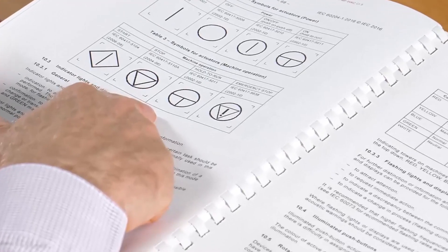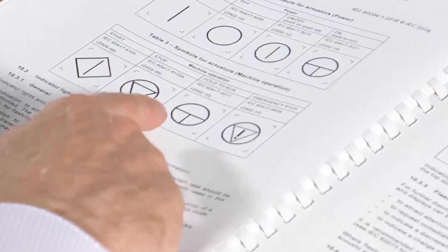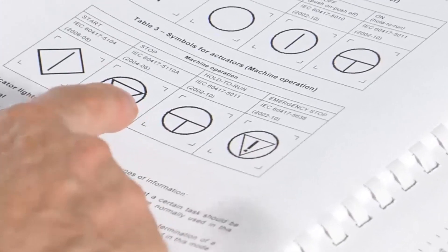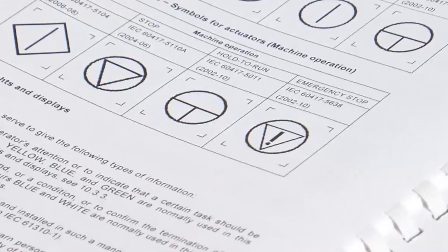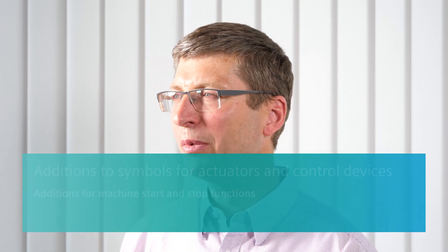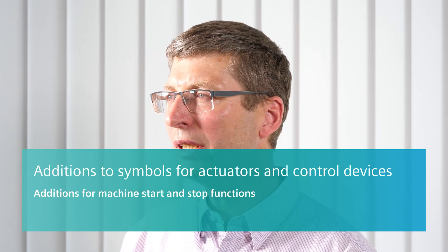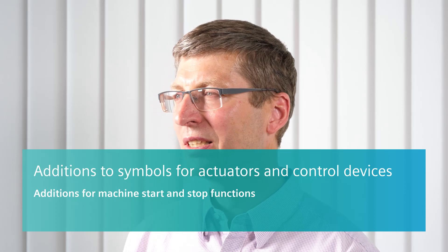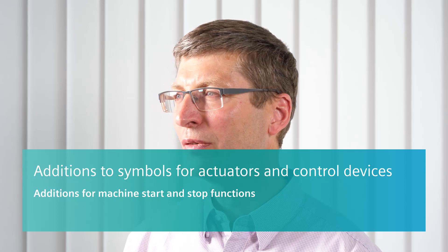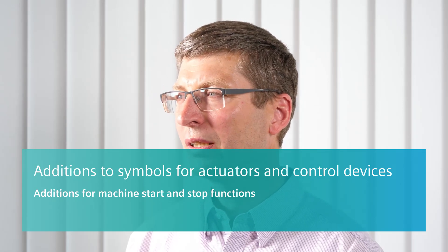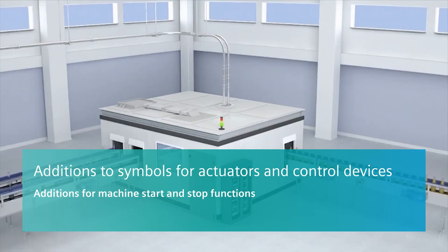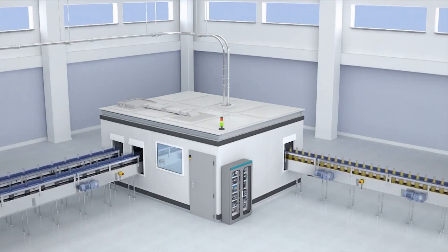The symbol for machine start now looks like this. Additions regarding actuators and control devices are provided in chapter 10. This especially concerns parts that are used for the machine functions start and stop.